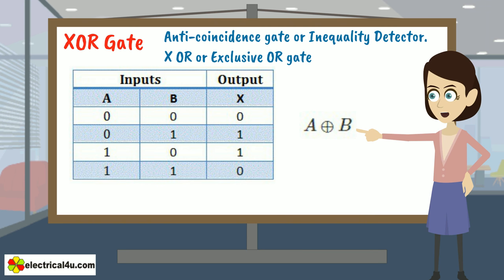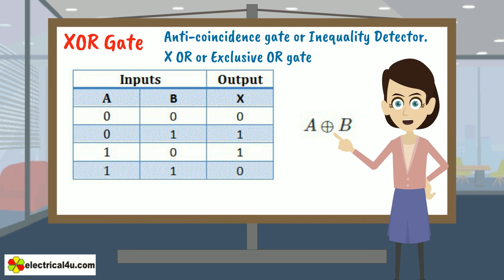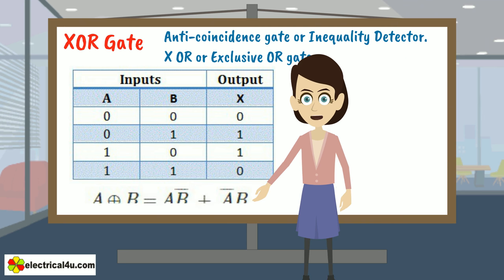The binary operation of this truth table is known as exclusive OR operation and it is represented by a plus sign surrounded by a circle, and this we call circled plus. From this truth table,